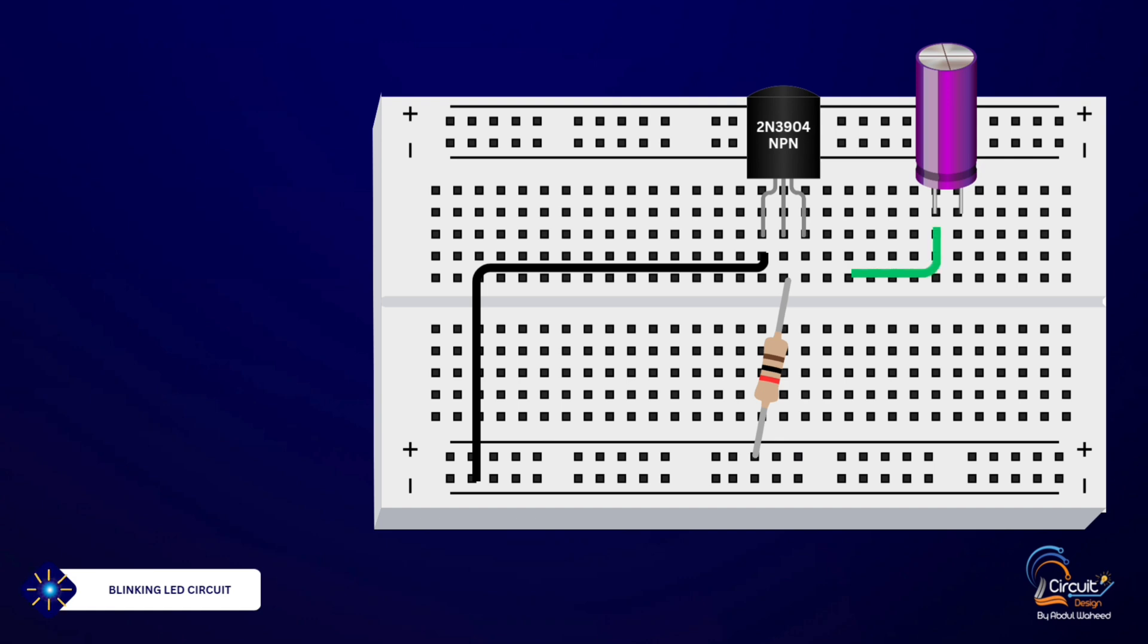Now, place the capacitor on the breadboard. Connect the positive lead of the capacitor to the collector of the transistor and the negative lead to the base of the transistor.